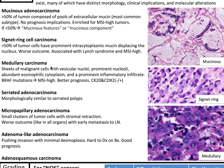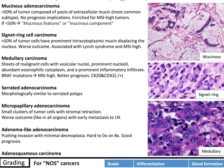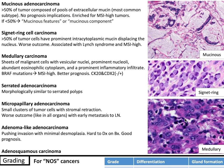Signet ring carcinoma: greater than 50% of tumor cells have prominent intracytoplasmic mucin displacing the nucleus. It is associated with a worse outcome and linked to Lynch syndrome and MSI-high. Medullary carcinoma shows sheets of malignant cells with vesicular nuclei, prominent nucleoli, abundant eosinophilic cytoplasm, and a prominent inflammatory infiltrate. You will have BRAF mutations leading to MSI-high, and there is a better prognosis. CK20 and CDX2 can be negative or positive.